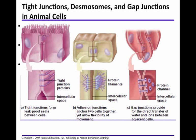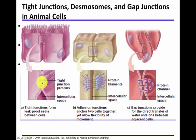In desmosomes, materials can still pass through, and they form strong bonds between the cytoskeleton of two neighboring cells. Tight junctions, on the other hand, seal off body cavities — there will be no communication between those cells. Tight junctions connect plasma membranes, whereas desmosomes connect cytoskeletons.